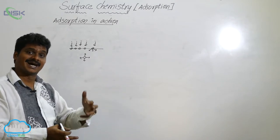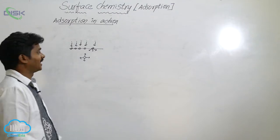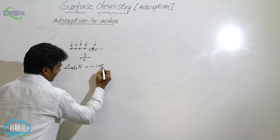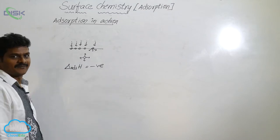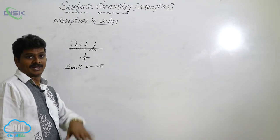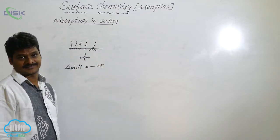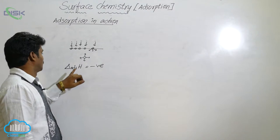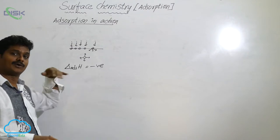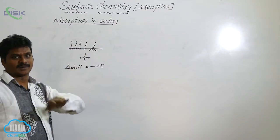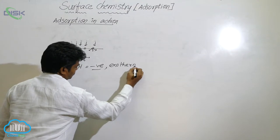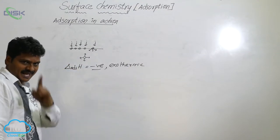That decrease in surface energy appears as heat. That is why the enthalpy of adsorption is negative. Enthalpy of adsorption is the amount of heat released when one mole of adsorbate is adsorbed on the surface of the adsorbent. It is negative, meaning adsorption is an exothermic process.